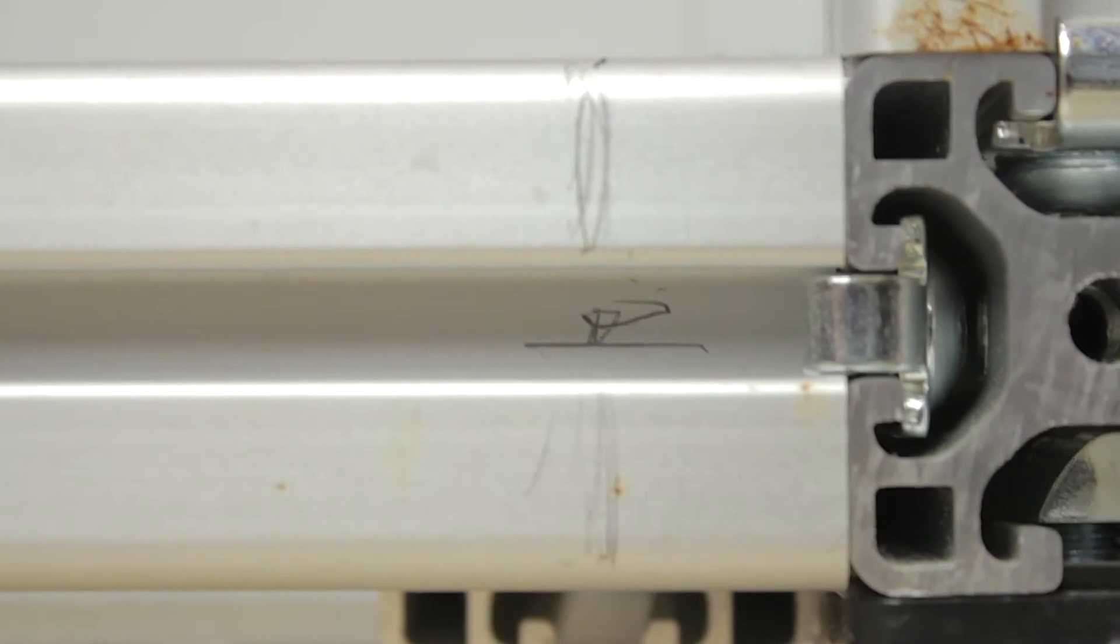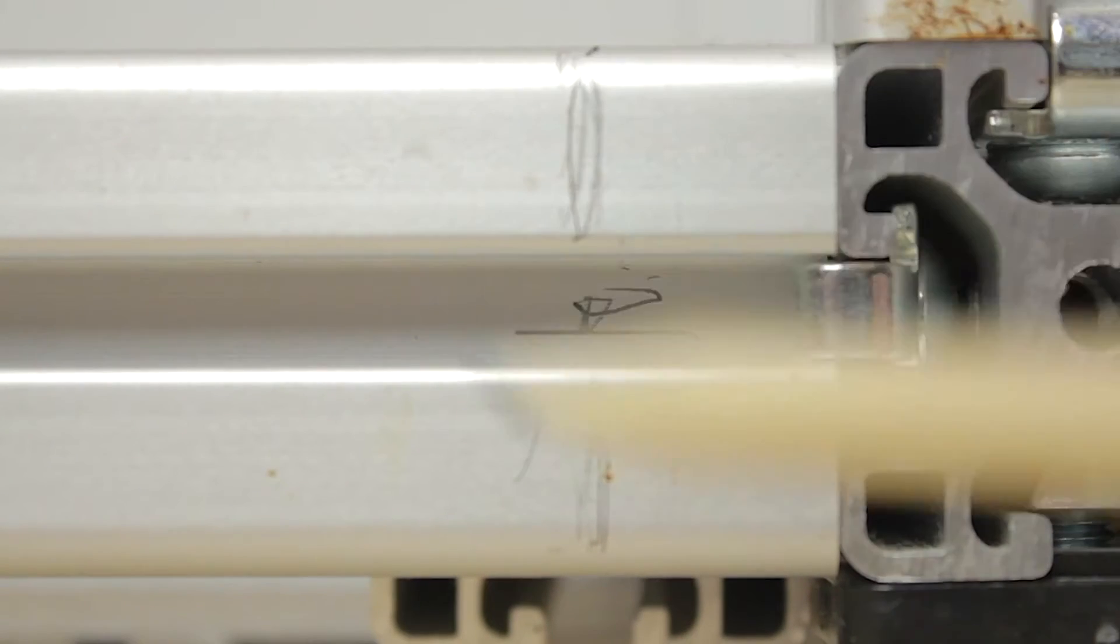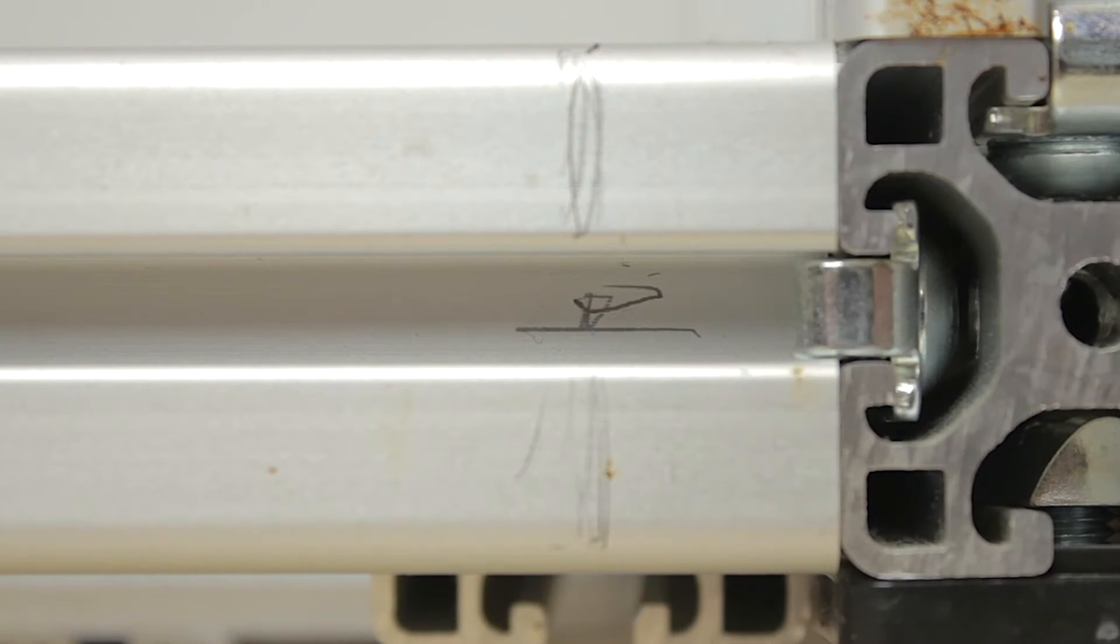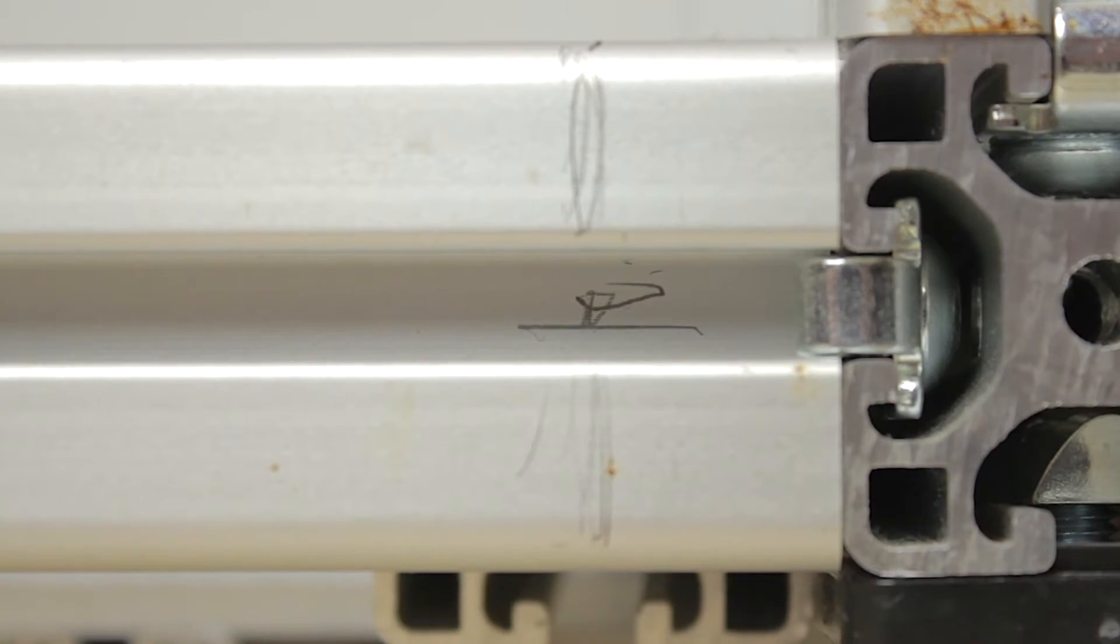As you can see here we have it perfectly marked and what we need to do is drill a hole on each of the corners to be able to mount the new profiles in place and we'll do that in all four corners.